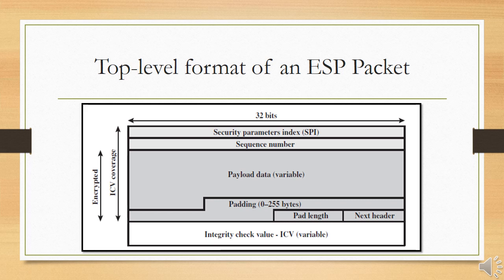The top-level format of an ESP packet contains the following fields. The Security Parameters Index (SPI) is a 32-bit field that identifies a security association. The Sequence Number is also a 32-bit monotonically increasing counter value, which provides an anti-replay function as discussed for AH.